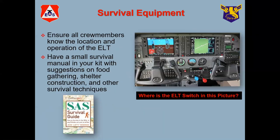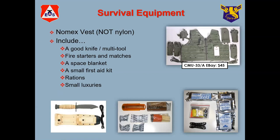During the pilot briefing, everybody should know where the ELT is located and how to work it. It's also a good idea to have a small survival manual with you. There are a number of them available from Army-Navy stores and online — materials from the Air Force, Special Forces, Navy, Coast Guard, and civilian survival guides. Have something as a backup because you may not remember all your training.